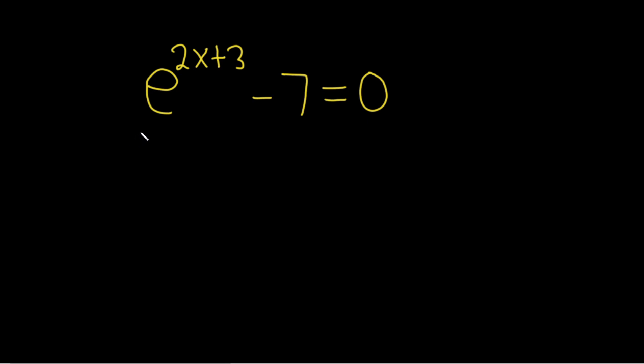Solve e to the 2x plus 3 minus 7 equals 0. Solution. In order to solve this problem, we have to first isolate the e. To do that, we'll start by adding 7 to both sides.